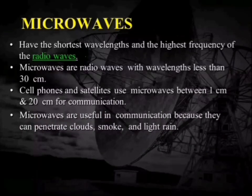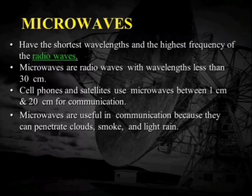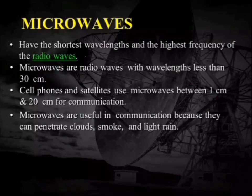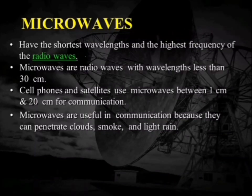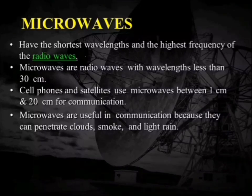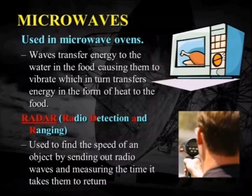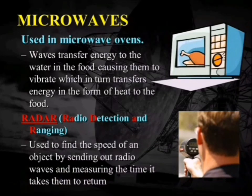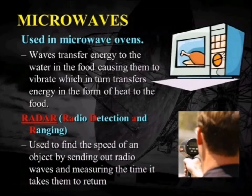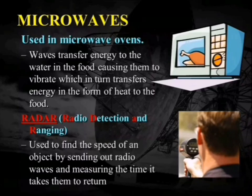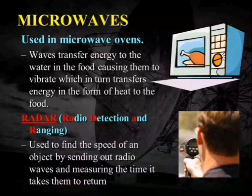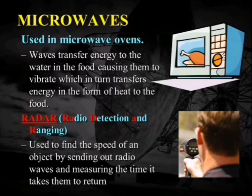Microwaves are our major concern in this subject. They have the shortest wavelength and highest frequencies of the radio waves, with wavelengths less than 10 centimeters. Cell phones and satellites use microwaves between 1 and 10 centimeters for communication. Microwaves can penetrate cloud, smoke, and light rain. Two major applications are microwave ovens — which transfer energy to water molecules in food to produce heat — and radar (radio detection and ranging), used by traffic police to measure the velocity of objects via frequency shift.